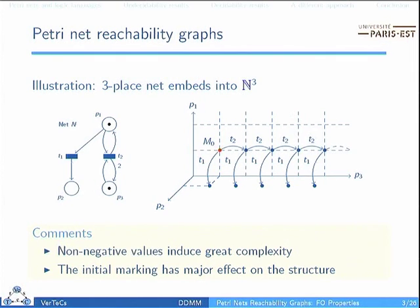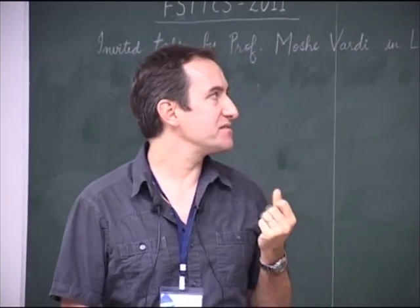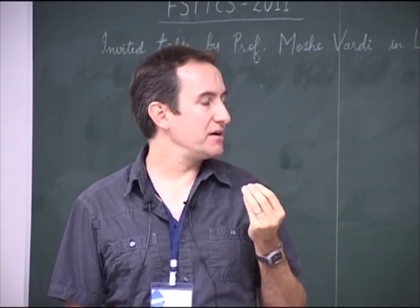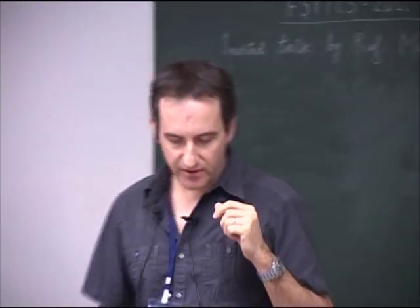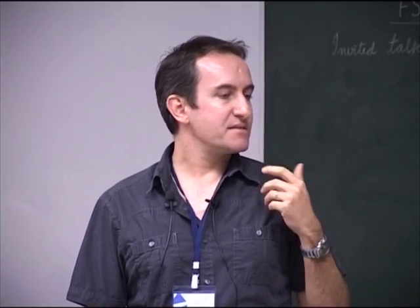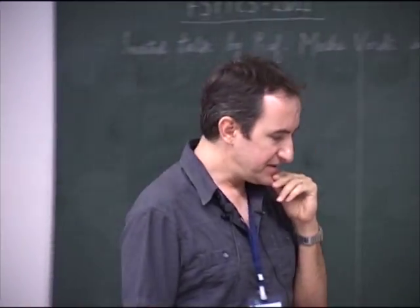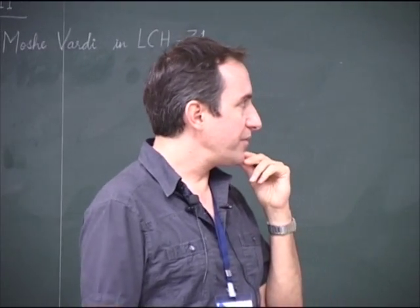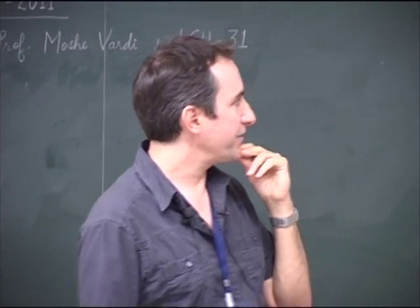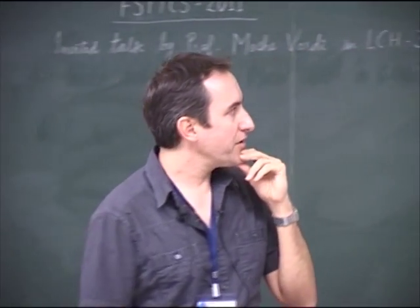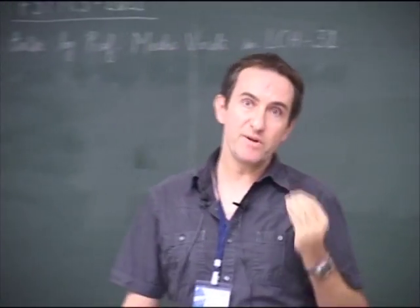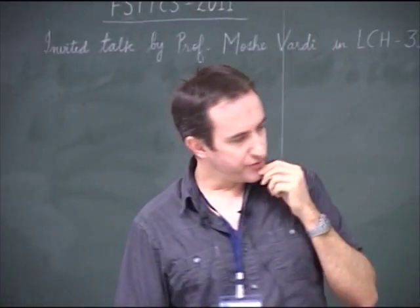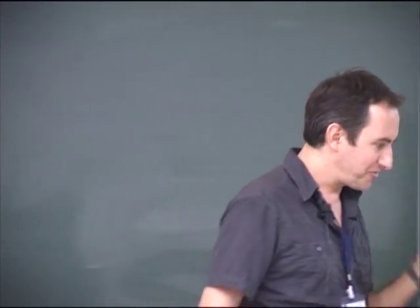In a PetriNet, you may not have negative content in the places. This is a source of complexity. It makes the system interesting in itself, and has some very important side effects, which I will discuss later. Another important thing is that the initial marking has a real impact on the shape of the graph — that's the kind of thing we will try to discuss.